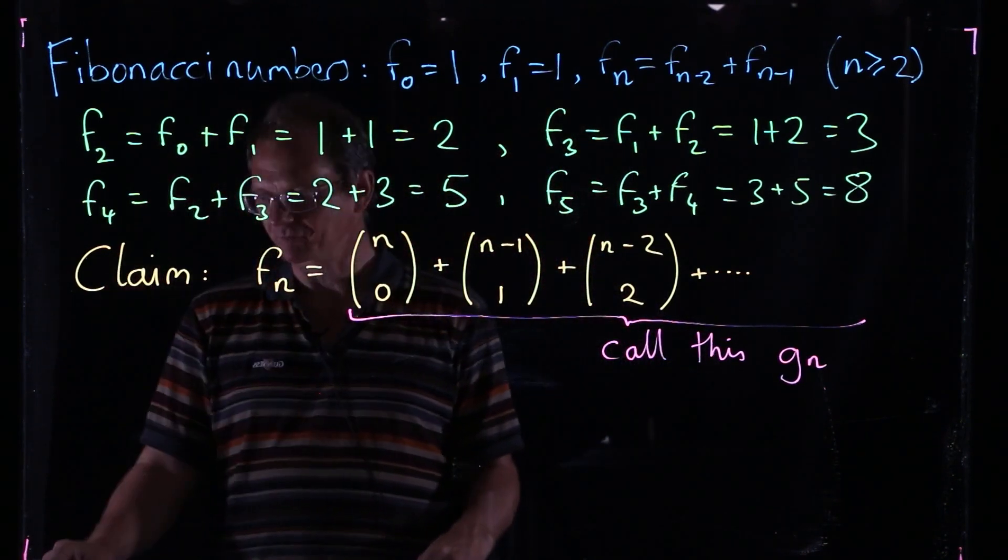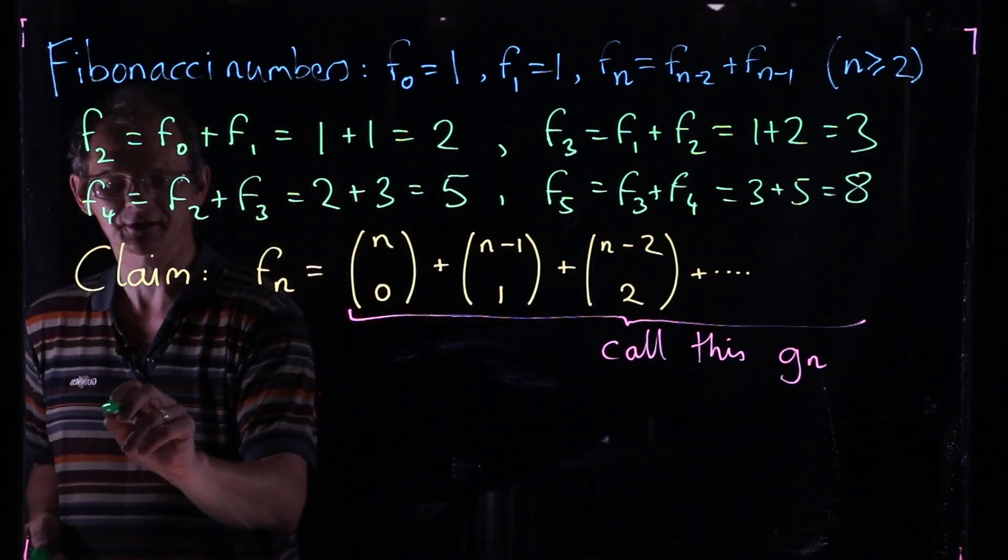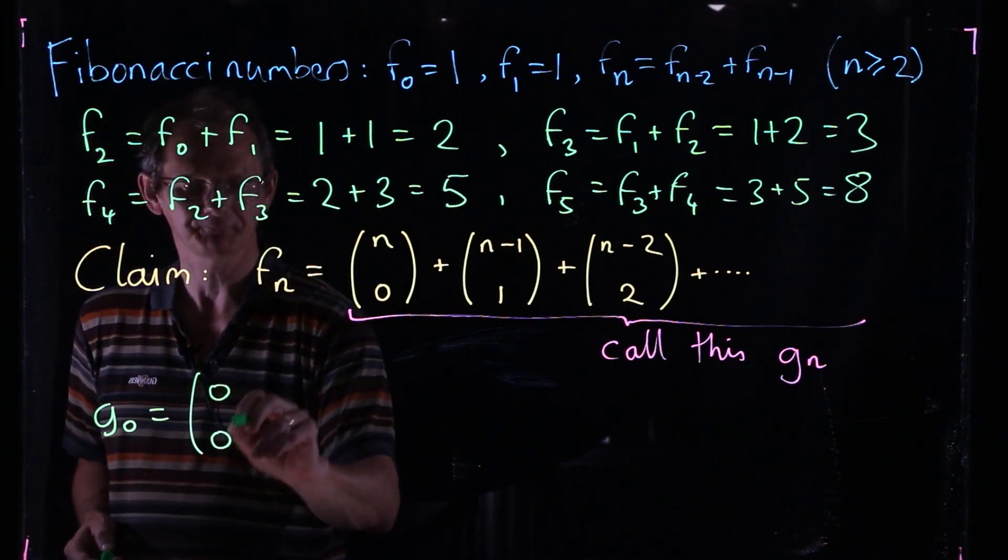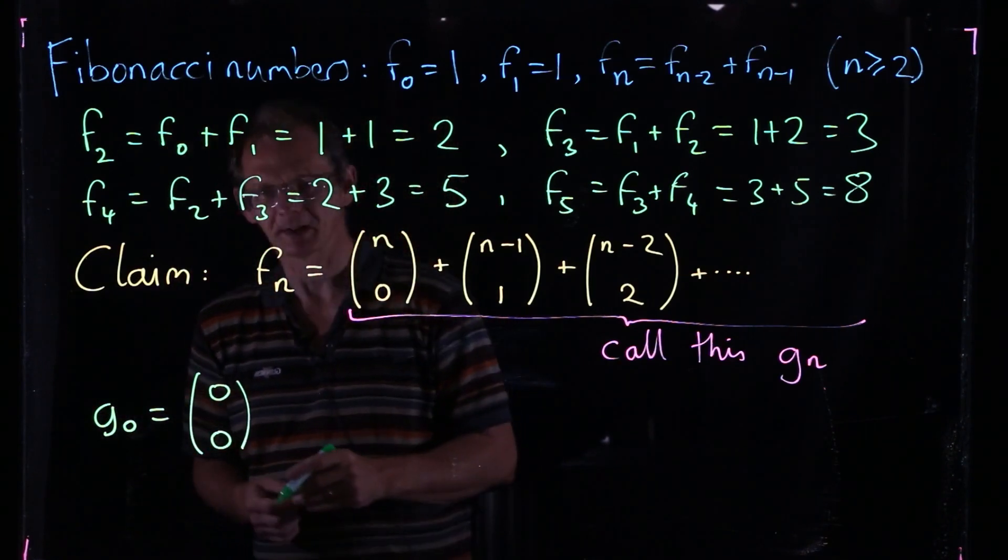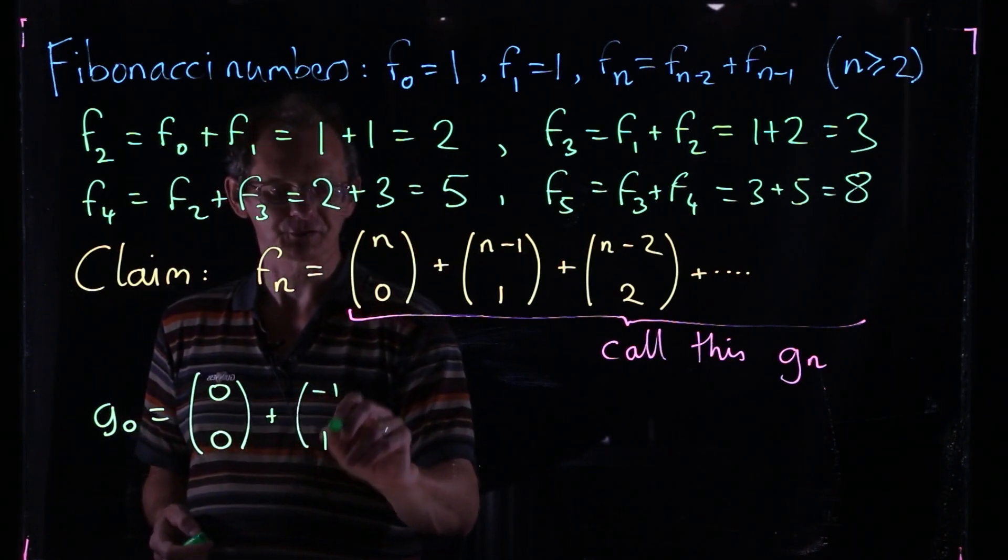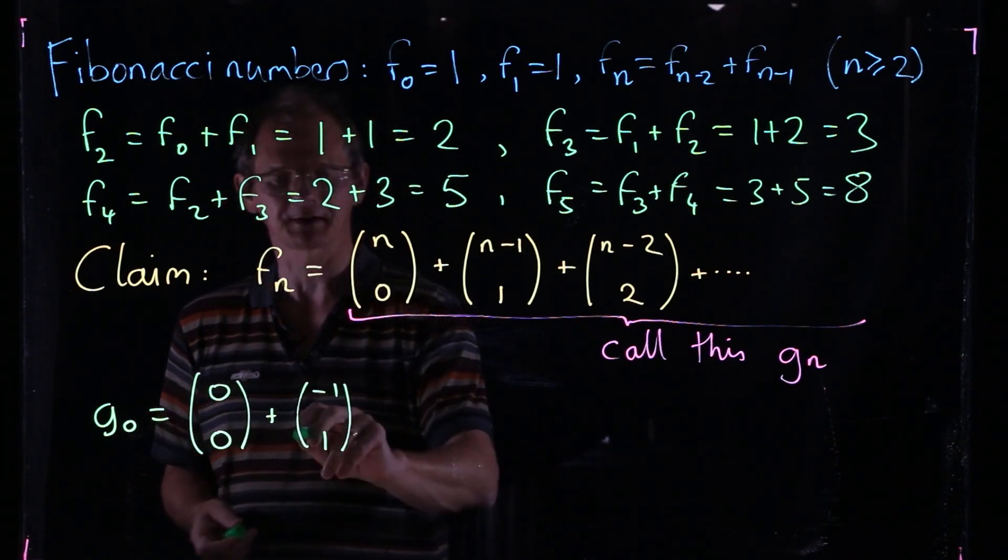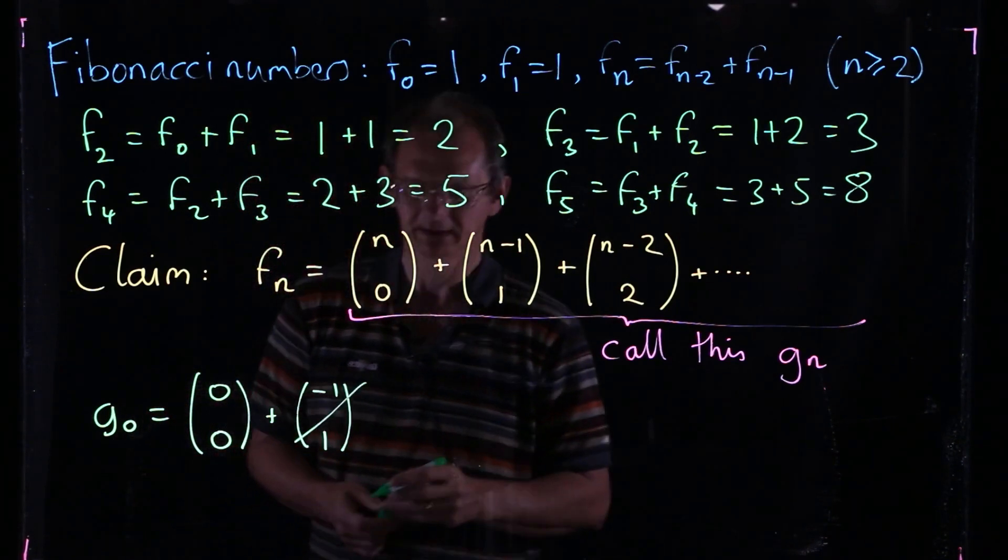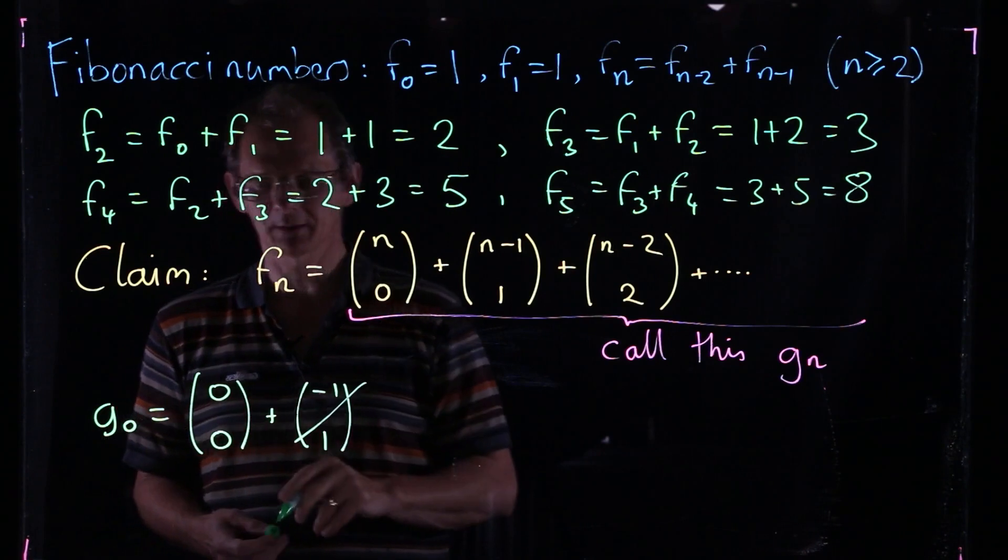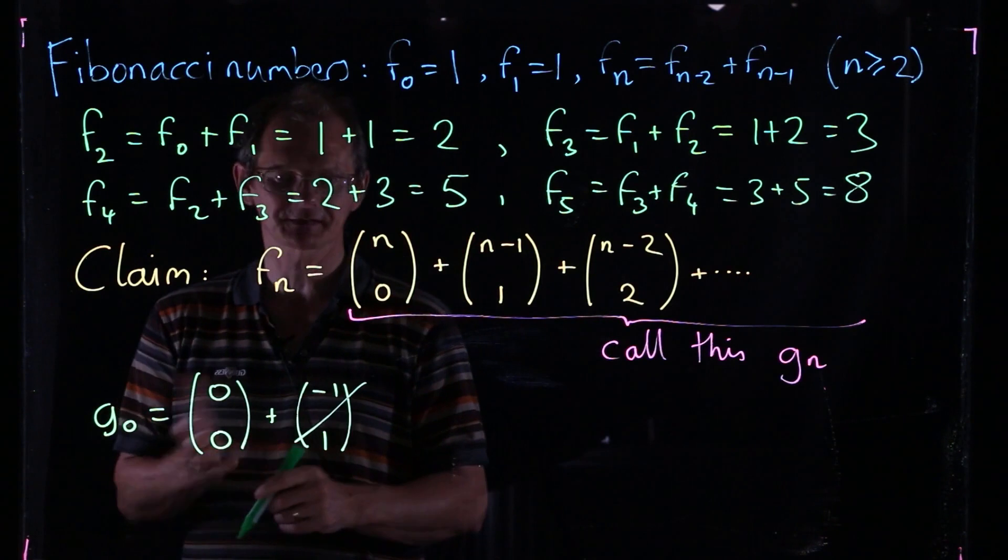So let's start by looking at the first few cases. Let's look at G0. So we start with 0 choose 0, and then the next one would be -1 choose 1. Of course, as soon as you've got a negative thing on the top, then it's 0, or when the top's less than the bottom, you get 0. So we've got just 0 choose 0, the number of ways of choosing 0 things from 0 things. That's equal to 1.